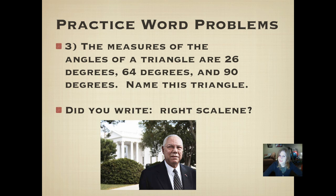Did you write right scalene? It's definitely a right triangle because it has an angle of 90 degrees. So no matter what, it's a right triangle. We know it's a scalene because it has totally different measures of angles, 26, 64, and 90. So all of its sides are going to be slightly different lengths. If it had two angles of the same measure, then we would have an isosceles. That would tell us it has two sides of the same length. But in this case, it would have been a right scalene. I hope you at least got the right part of it.